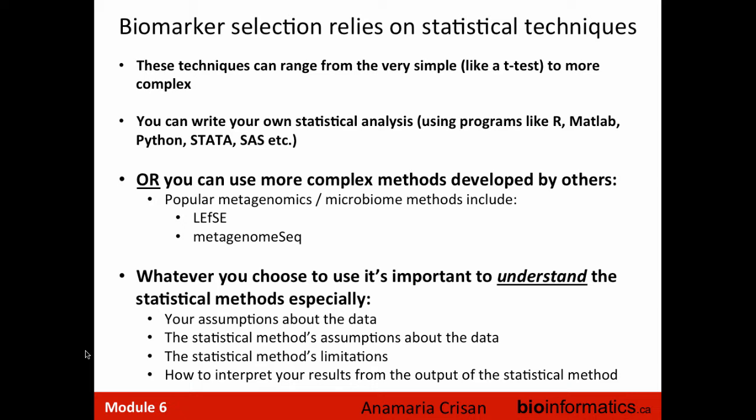Once sequencing is done, how do we use statistical or computational methods to identify optimal biomarkers? Techniques range from very simple, like a t-test, to complex custom software in R or MATLAB. Tools like MetagenomeSeq can take your labeled sample data and suggest appropriate biomarkers. Whatever you choose, it is critical to understand what the statistical method is doing and what assumptions it makes.